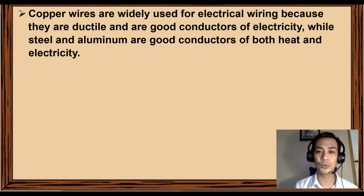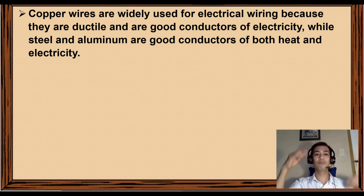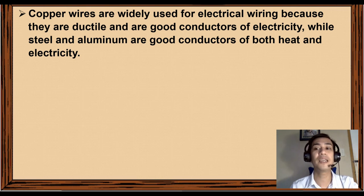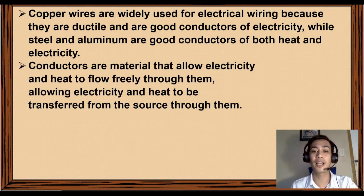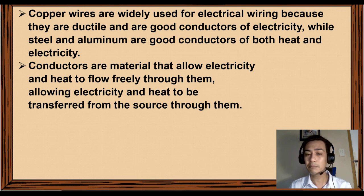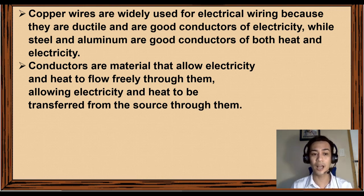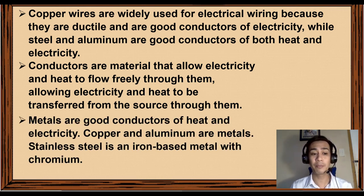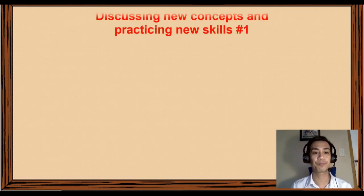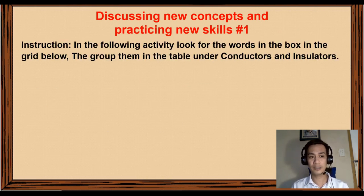Copper wires are widely used for electrical wiring because they are ductile and are good conductors of electricity. Steel and aluminum are good conductors of both heat and electricity. Conductors are materials that allow electricity and heat to flow freely through them. Metals are good conductors of heat and electricity. Copper and aluminum are metals; stainless steel is an iron-based metal with chromium.